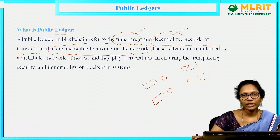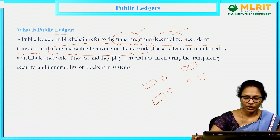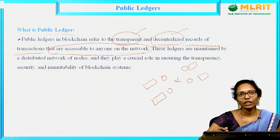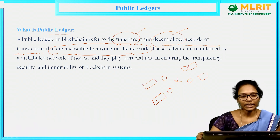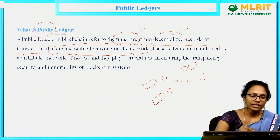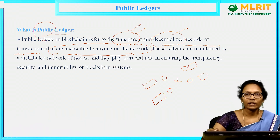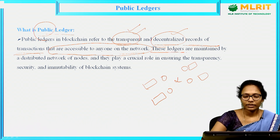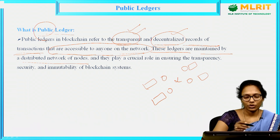Transparent in the sense anyone can see the content. Decentralized — there is no central authority. And distributed in the sense each and every node will contain a copy of the ledger. So it is called public because it is transparent — anyone can see it and anyone can access it. These are the ledgers maintained by the distributed network of nodes.